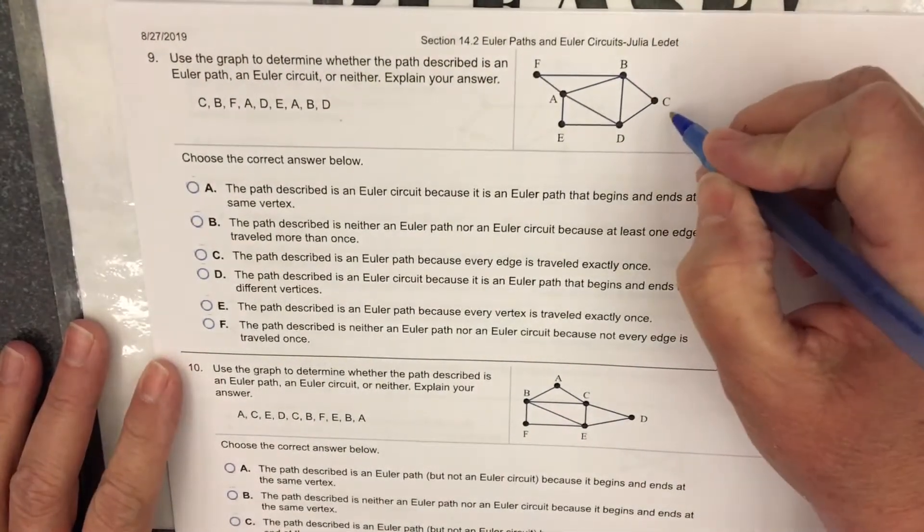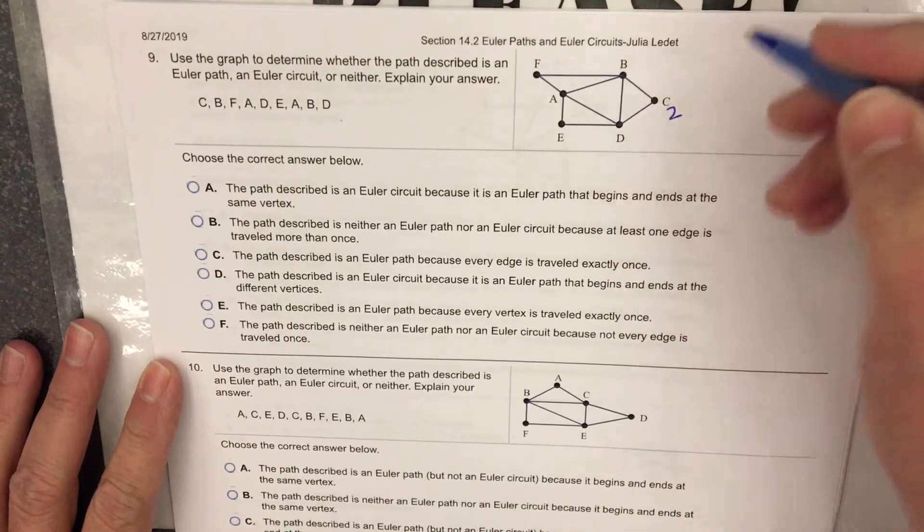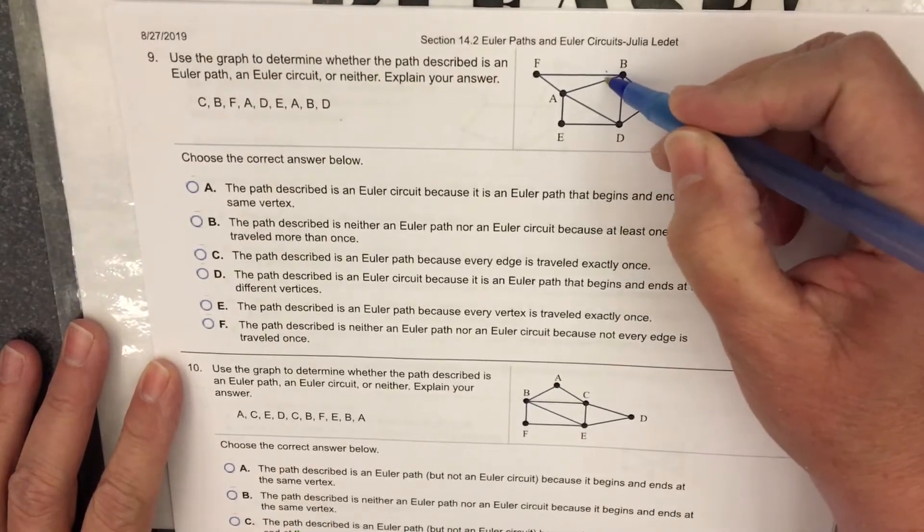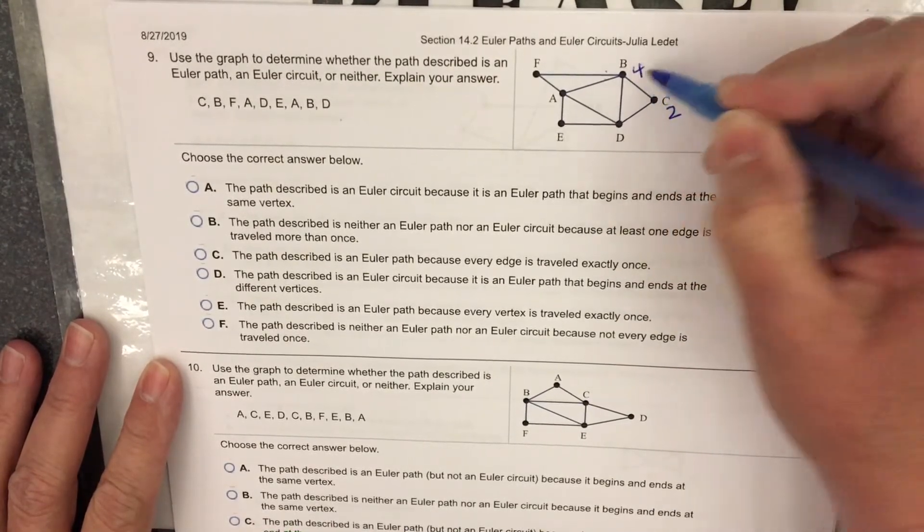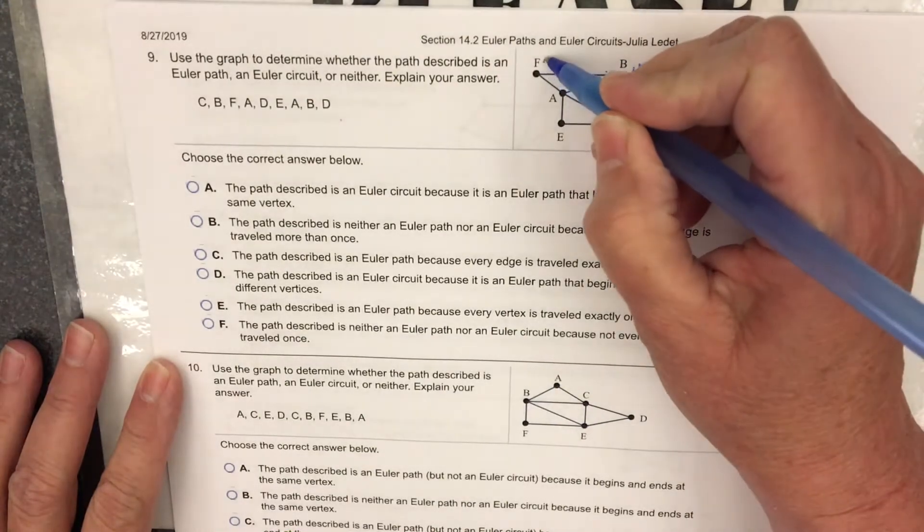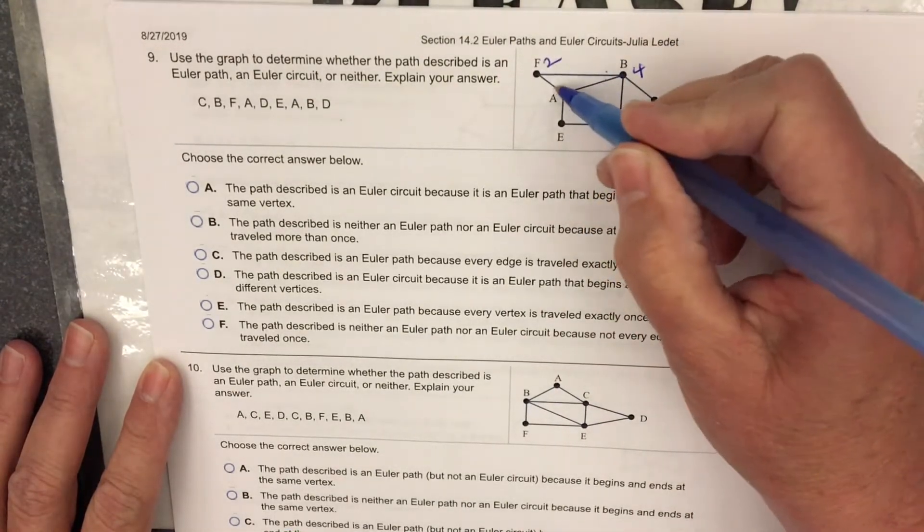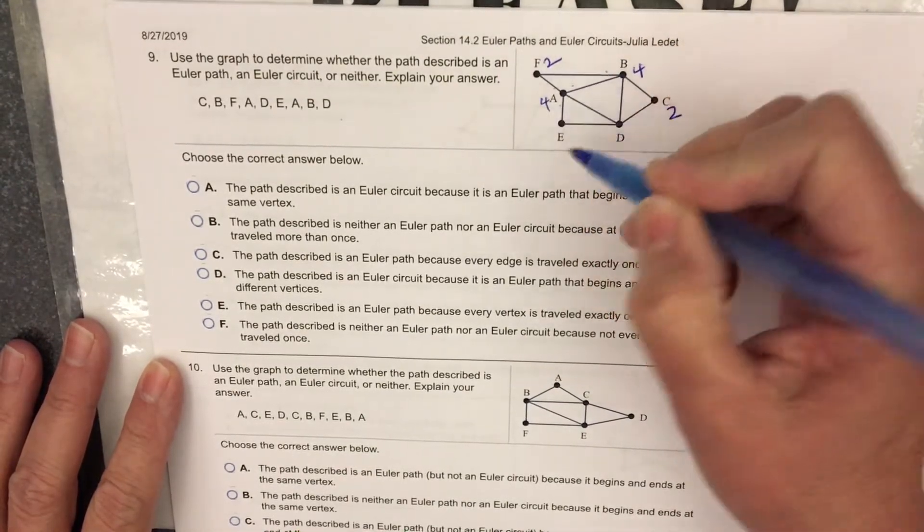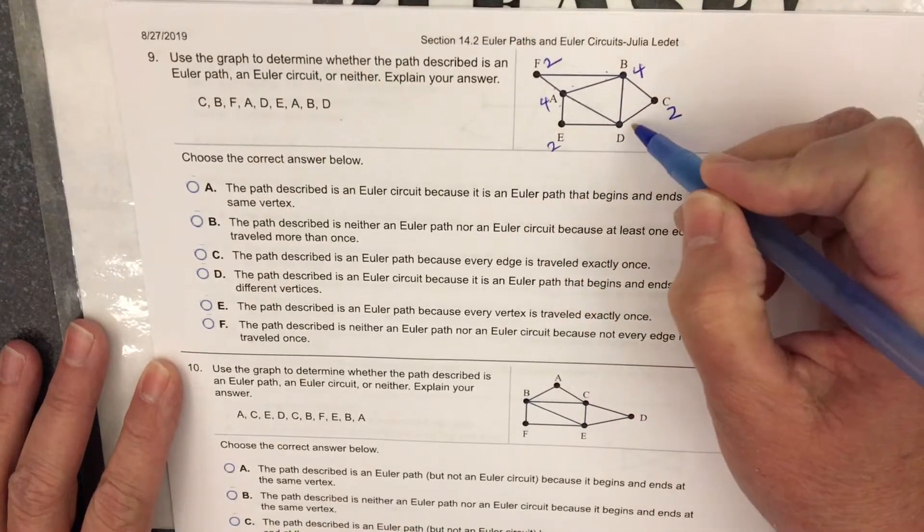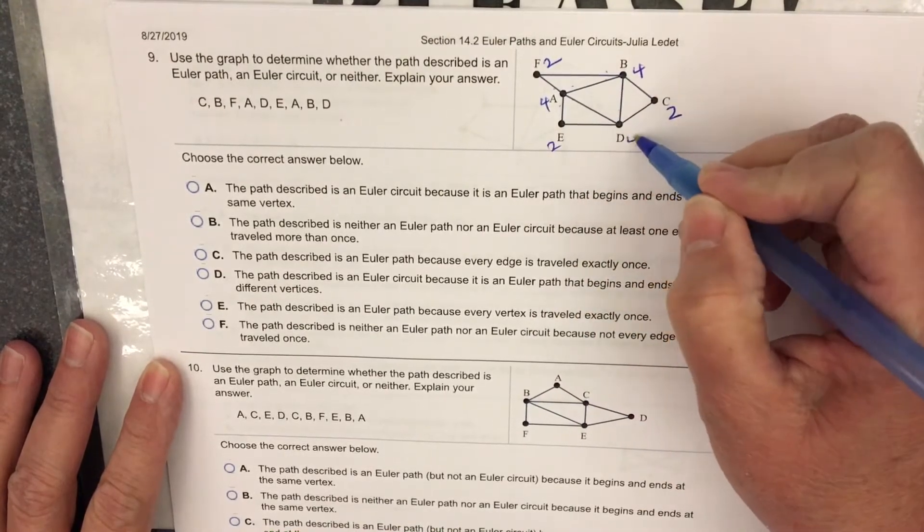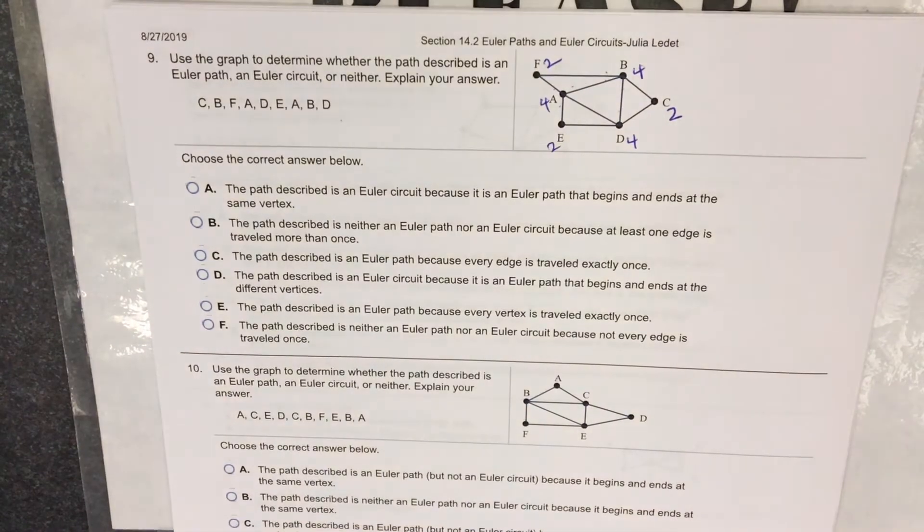The degree of C is 2. The degree of B is 1, 2, 3, 4. The degree of F is 2. A is 1, 2, 3, 4. E is 2. D is 1, 2, 3, 4. They're all even.